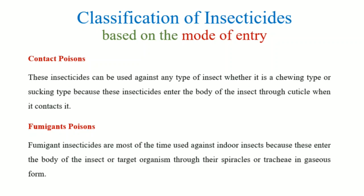Next, fumigant poisons are insecticides mostly used against indoor insects. These enter the insect's body in gaseous form through the spiracles and tracheae.